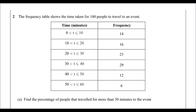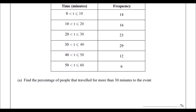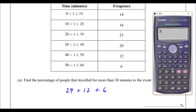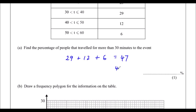Question 2. The frequency table shows the time taken for 100 people to travel to an event. Part A says: find the percentage of people that travelled more than 30 minutes to the event. So how many people travelled for more than 30 minutes? We've got 29 plus 12 plus 6, which is 47. So it's 47 out of 100 people.